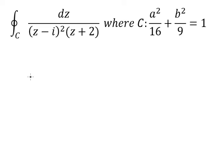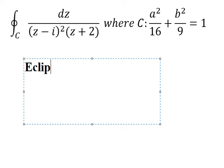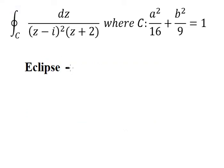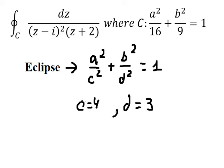Hello everybody. Today I want to talk about calculus — the topic is the Cauchy residue theorem. I want to show you how to answer this one. This is about an ellipse. The standard formula is a² over c² plus b² over d² equals one. For this problem, the number 16 means c equals four, and the number nine means d equals three.